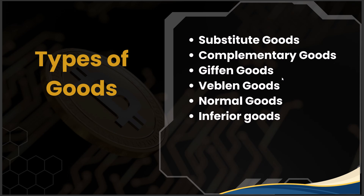Normal goods are those for which demand rises as consumer income rises. For example, when a consumer's income increases they may upgrade from a basic phone to an iPhone — that is a normal good. Inferior goods are those whose demand decreases when consumer income rises. For example, as income rises a person may buy a two-wheeler instead of using a bicycle, so the bicycle is an inferior good.